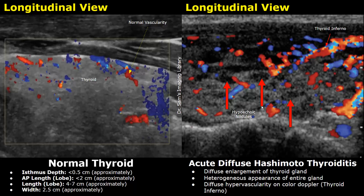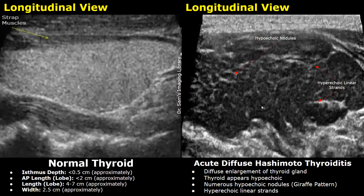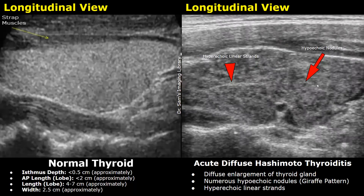In some cases, along with a hypoechoic heterogeneous appearance of the thyroid, you will find hyperechoic linear strands. These are seen in some cases of Hashimoto thyroiditis. This is another image showing hyperechoic linear strands within the thyroid in Hashimoto thyroiditis, where numerous hypoechoic nodules are also present.